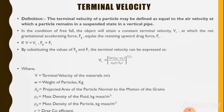If V equals Vt and Fg equals Fr, then by substituting the values of Fg — the net gravitational accelerating force — and Fr — the resisting upward drag — the terminal velocity can be expressed as: Vt = [2W(ρp − ρf) / (ρp · ρf · Ap · C)]^(1/2).